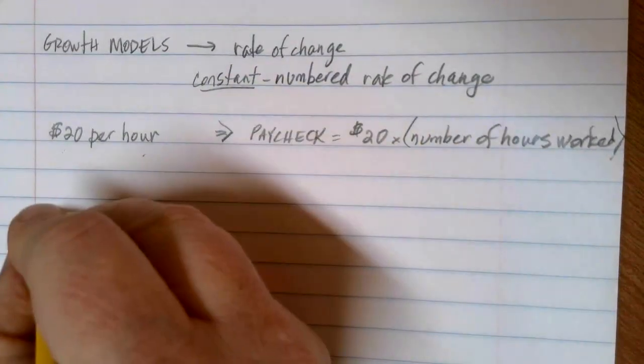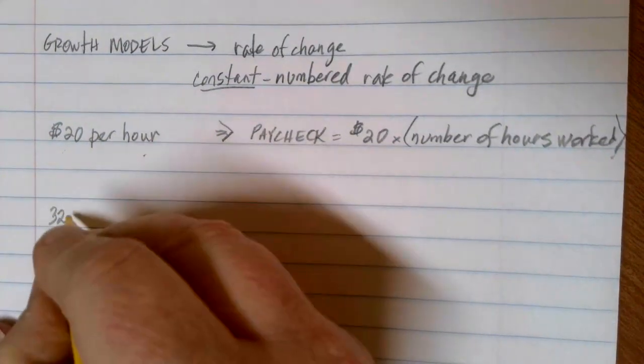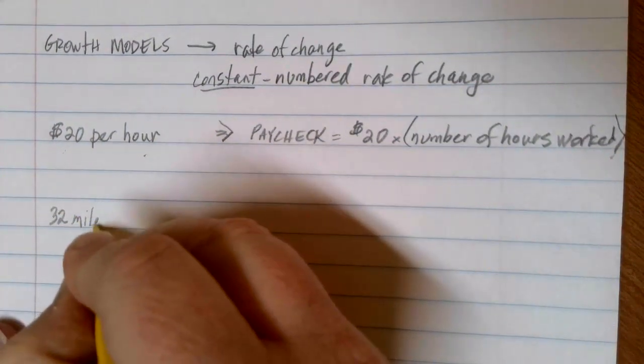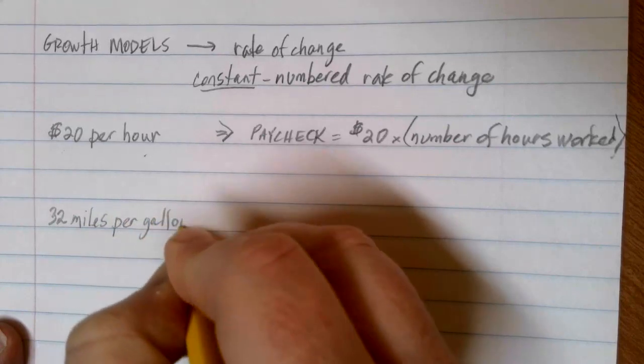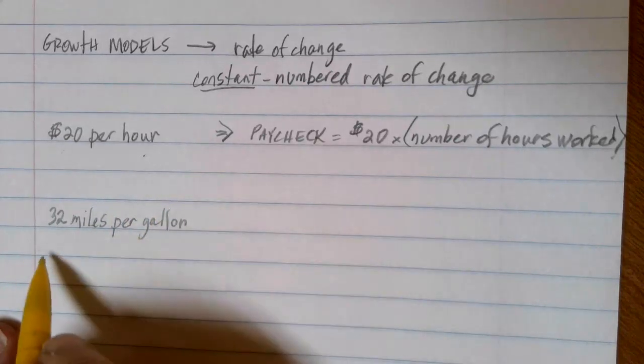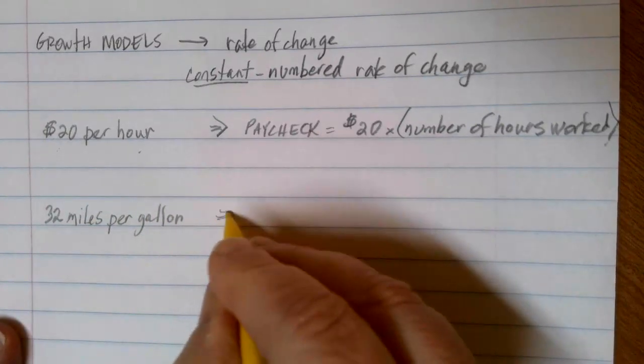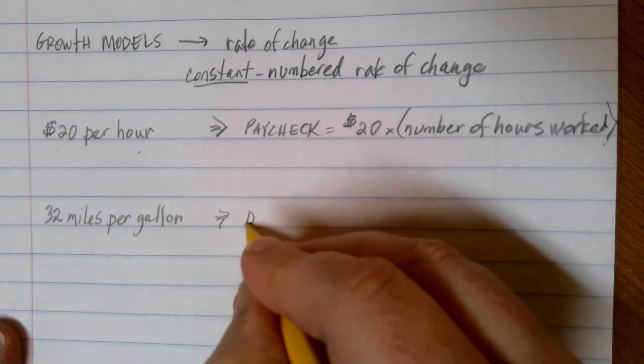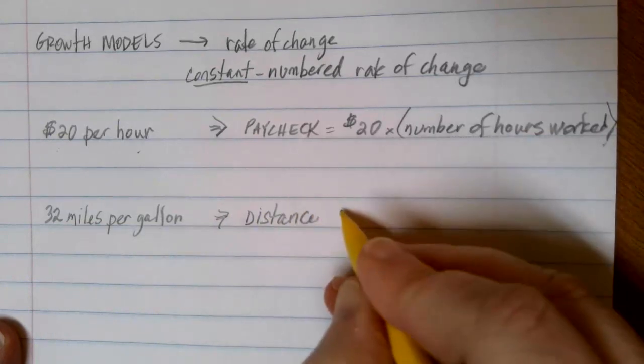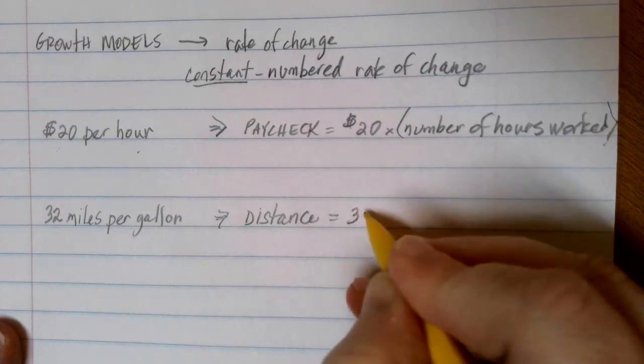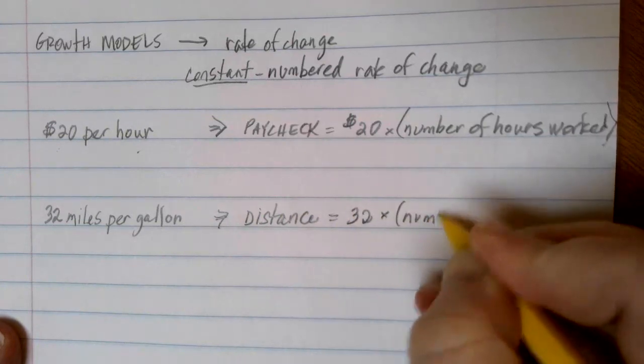Another example that you might've seen: you have a car that on the sticker says that it can get 32 miles per gallon. So for every one gallon of fuel that I add to my car, I expect that I will be able to drive 32 miles. If I want to figure out the total distance that I can drive in my car, it's going to depend on how much fuel is in my tank. I'm going to take that 32 miles per gallon and I'm going to multiply it by the number of gallons in my tank.